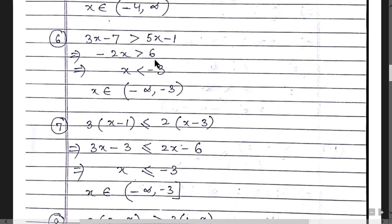Question 6: 3x - 5x = -2x, and -1 + 7 = 6, so -2x < 6, giving x < -3. The answer in interval notation is (-∞, -3), with both round (open) brackets since both endpoints are excluded.